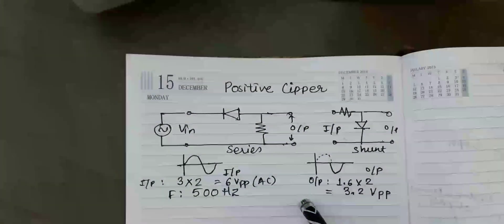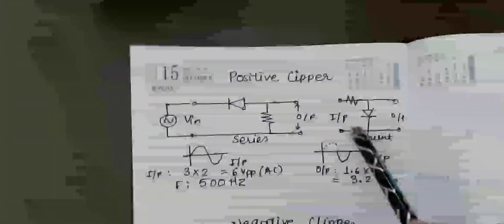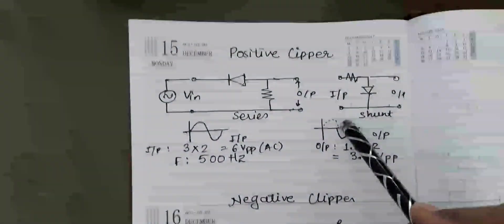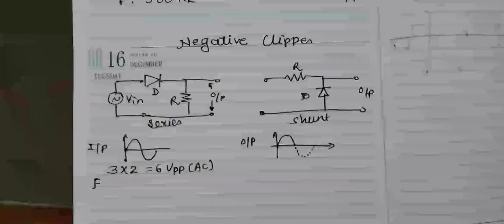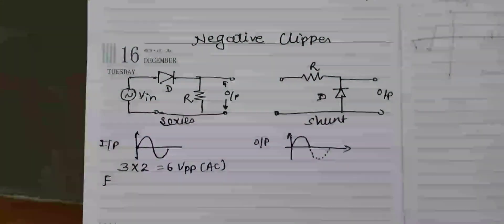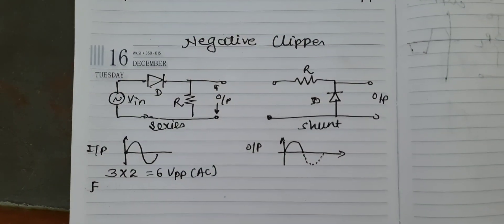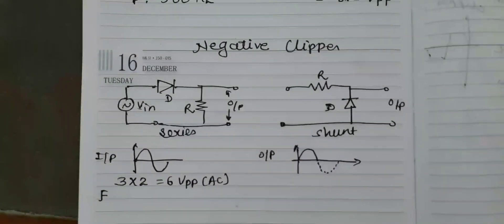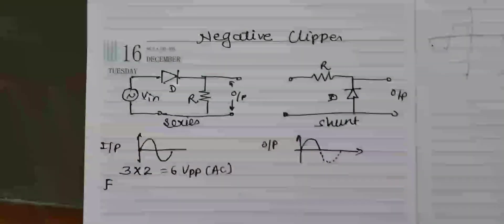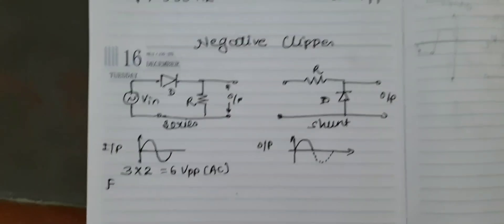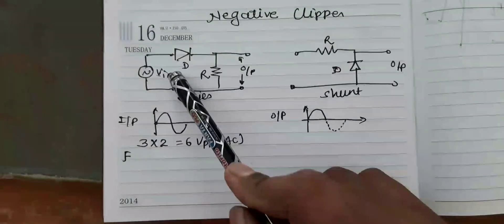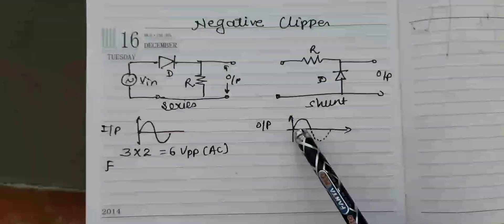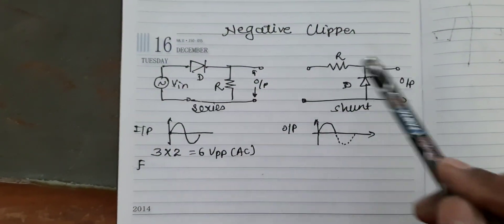Previously, we saw the positive clipper, where the positive cycle was clipped or removed. To revise: a clipper circuit is a circuit which clips or removes the positive or negative portion of the AC input. A negative clipper is equivalent to a half-wave rectifier and produces positive pulses. There are two types: series and shunt.